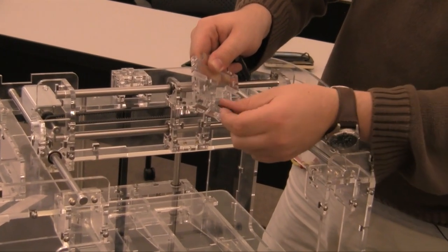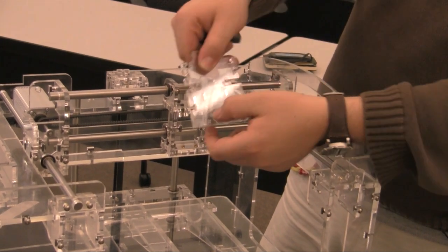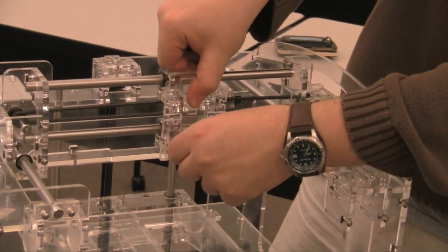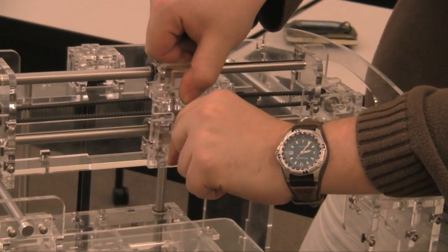Using the 2.5mm screws, place them through, attach them to the carriage, and secure them tightly.